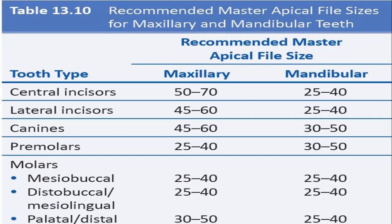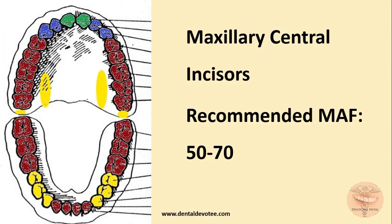This is the table given in Grossman's 13th edition. According to this table, the central incisors, lateral incisors, canines, and premolars each have a different recommended master apical file size. This table may seem cumbersome at first, but with some discussion and techniques using images, we'll remember it and never forget it.